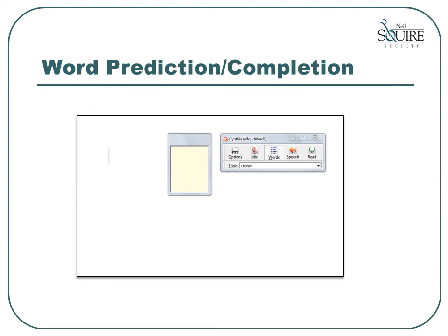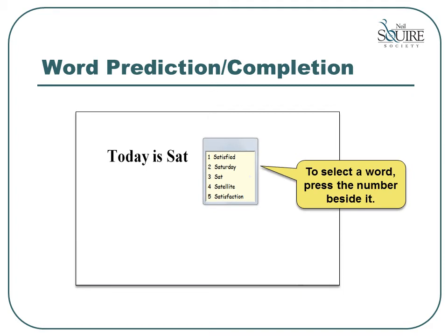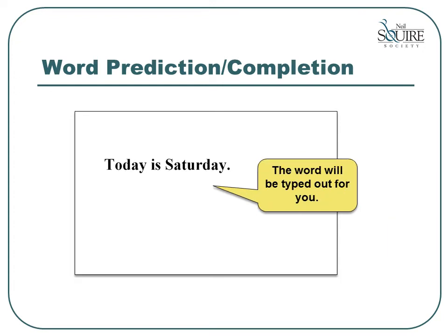Another software option to help you type is to use a program which provides either word prediction or word completion. When using this type of software, a list of possible words is displayed as you type. You can then select the correct word from the list by pressing the number beside it, and the software will complete the typing for you. This type of software can be beneficial for someone who types slowly or someone who has difficulty with spelling or accuracy.